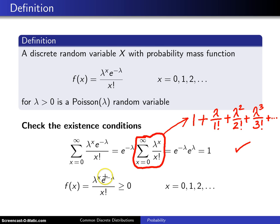The second existence condition says that f of x has to be greater than or equal to 0 for all x values. And notice that lambda to the x is positive, same is true of e to the minus lambda, and the same is true of x factorial. So this condition is satisfied as well.